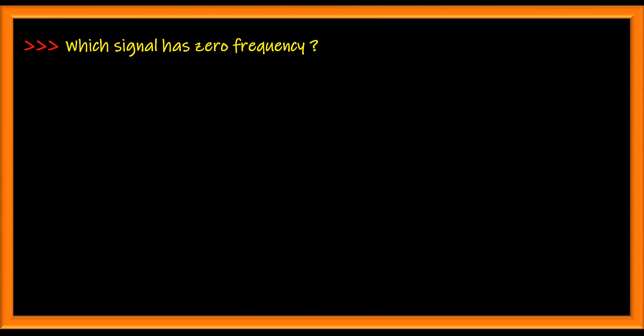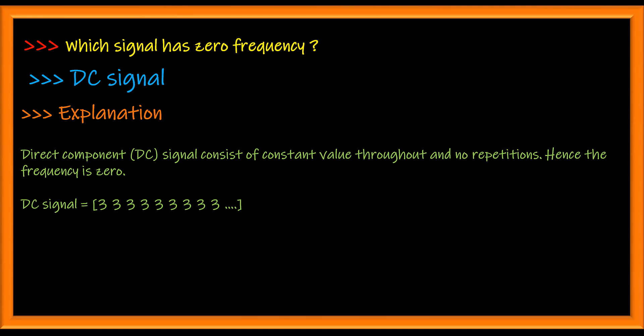Which signal has a zero frequency? A signal which has constant amplitude, or a DC signal, will always have a zero frequency.